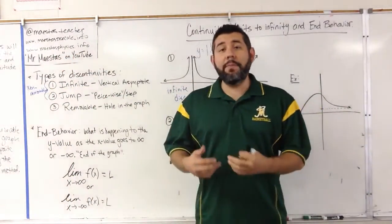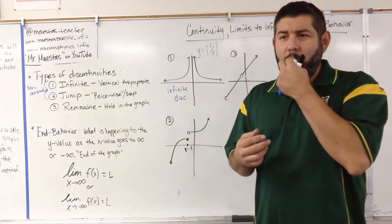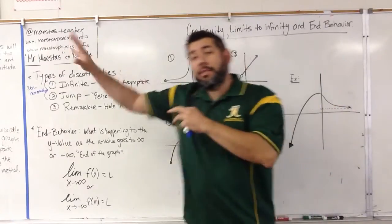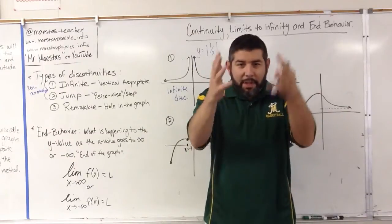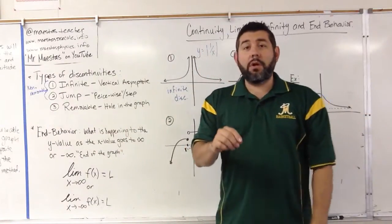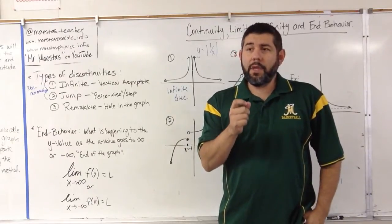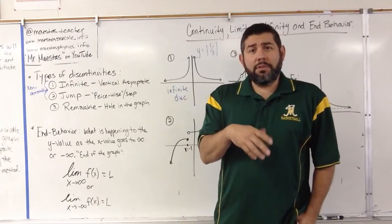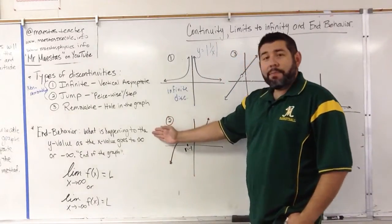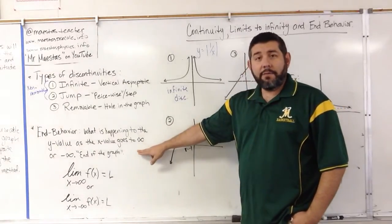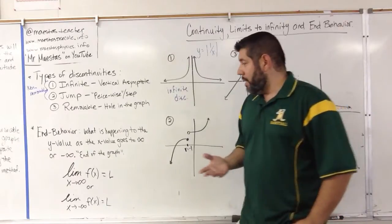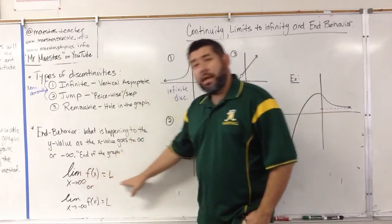Now let's talk about end behavior. End behavior is basically what's going on at the ends of the graph — as x goes to infinity and as x goes to negative infinity. We're looking at the y value: what does it approach, what does it do as x gets larger and larger, or smaller toward negative infinity? We can denote that with new terminology called a limit. Here is the way we write end behavior in terms of limits.